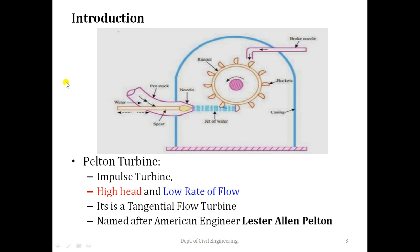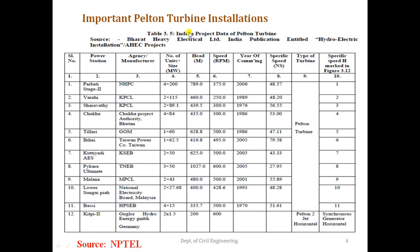The Pelton turbine is also called the Pelton wheel. It is called an impulse turbine because the energy available at the inlet of the turbine — just before striking — is purely kinetic energy. The Pelton turbine requires high head and low rate of flow. It is a tangential flow turbine, as the jet hits the runner tangentially. This turbine was named after American engineer Lester Allen Pelton.